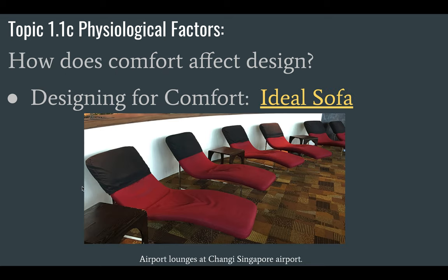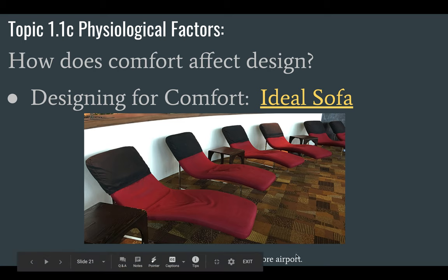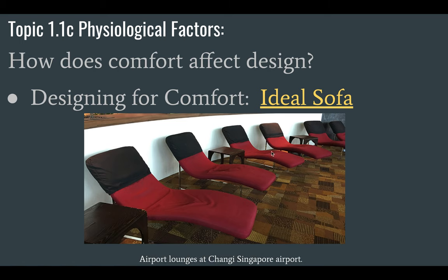Here's an example of comfortable seating — some airport lounges in the Singapore airport. You can imagine these are nice and comfortable. These are meant for people to lounge in; they want you to stay there for a while. If you have an eight-hour layover and you're jet-lagged and need a little nap, these are designed to help you with that.